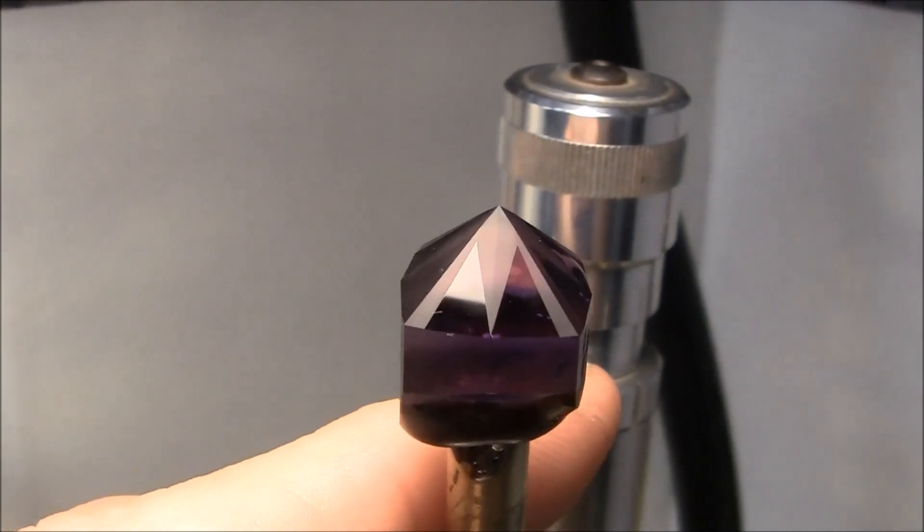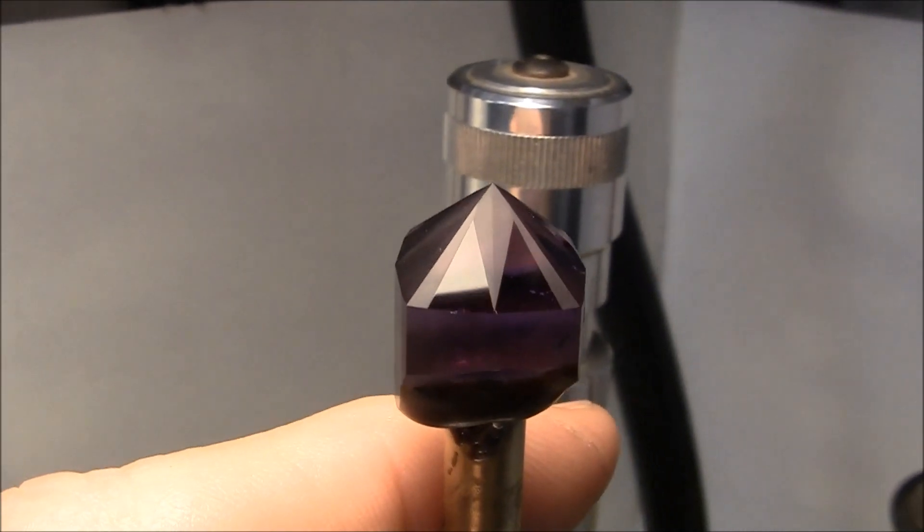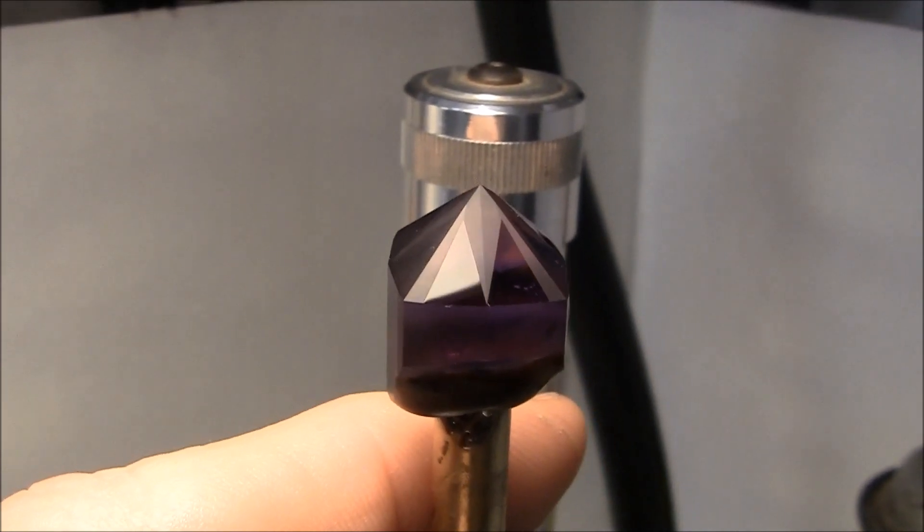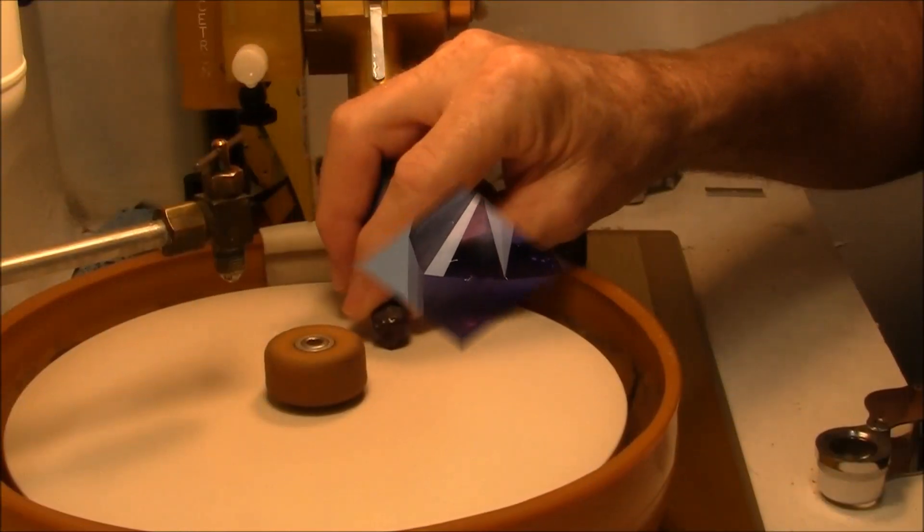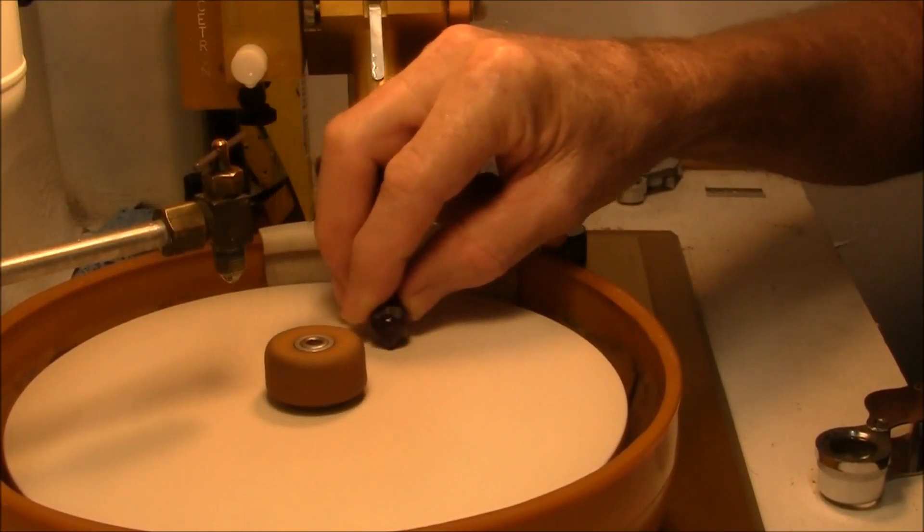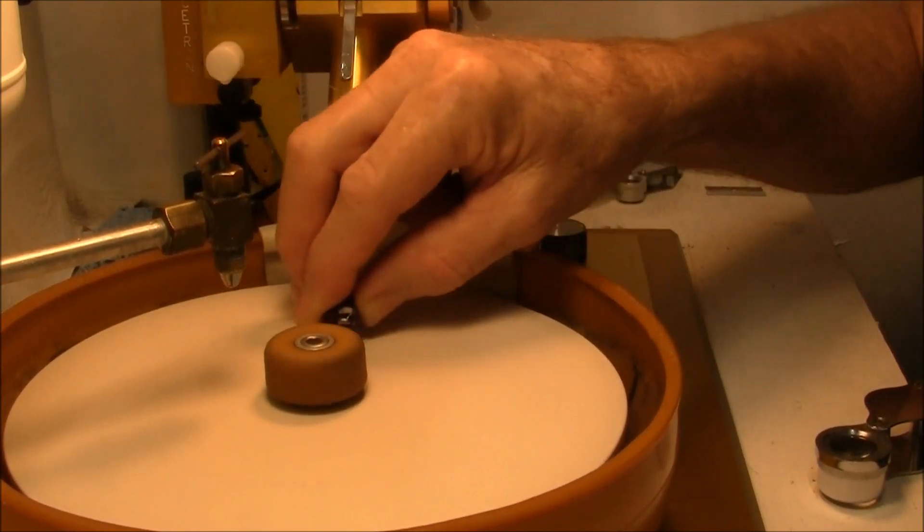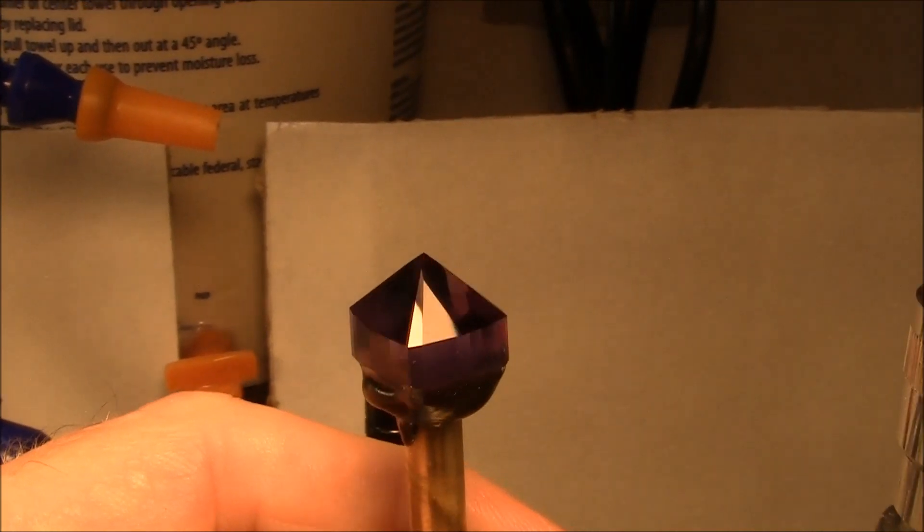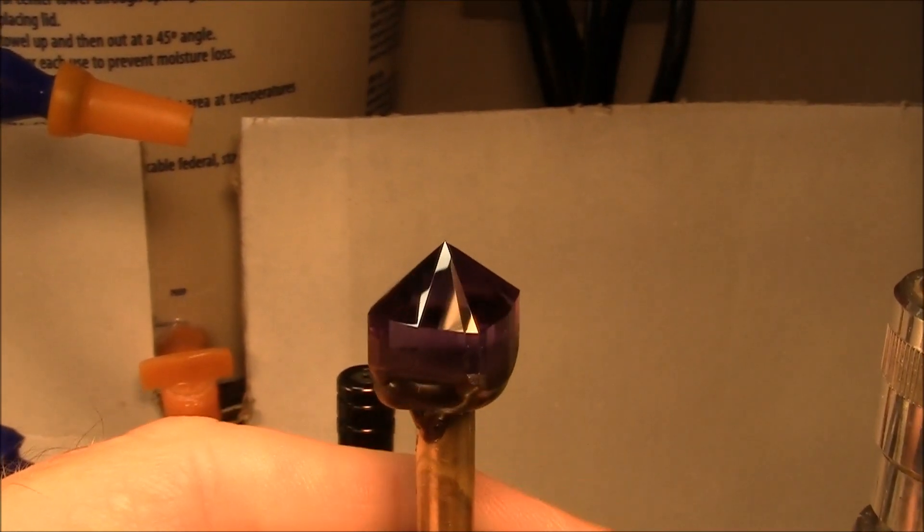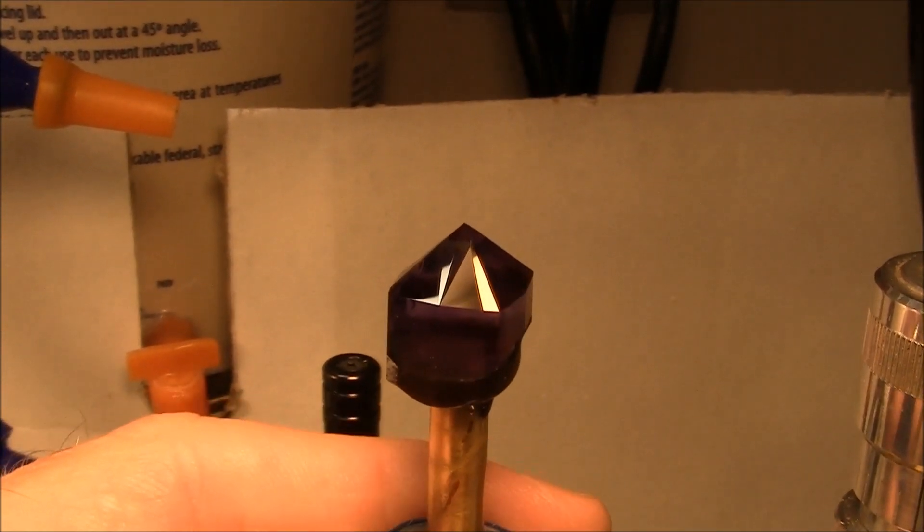That facet is done. It might just need a little bit more. Now the polishing is completed. The pavilion is finished so I'll transfer the gem.